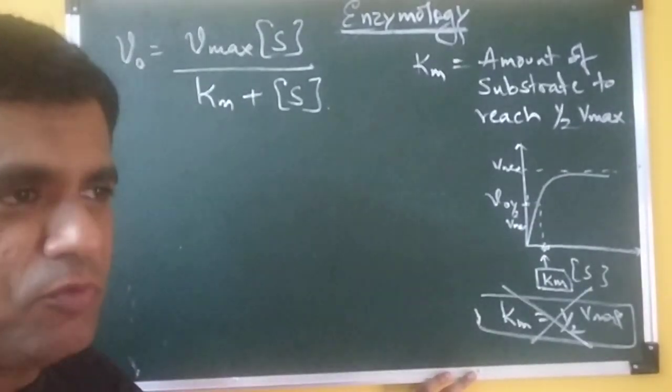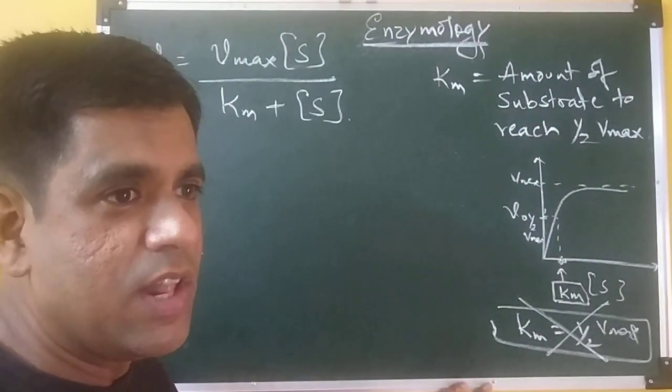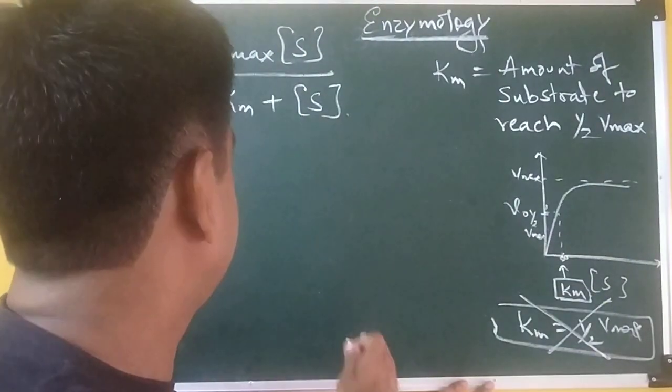Now, many students then believe that if we double the amount of substrate than that of the value of Km, we reach Vmax. Let us see whether it really happens.